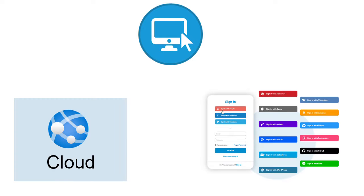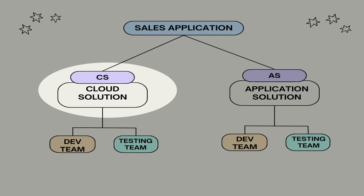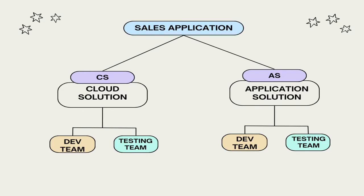Let's consider an example. We have a web application currently on-premises available only in a limited network, and we are planning to expand this application across the globe. We are planning to bring two major changes: one is migrating the application to cloud, and another is social media integration login — meaning you can log in with Google or Apple ID. We are going to strategize the area path based upon the feature as well as by team name, with two major classifications: cloud solution for cloud migration, and application solution for social media login integration.